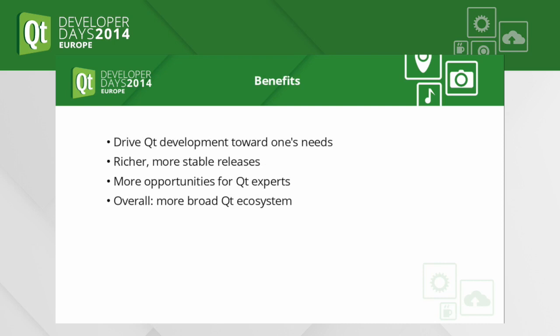The whole idea was that, of course, Digia is one of the main contributors, but there are also other key players. We wanted to add features to Qt or fix bug reports that other people were not interested in fixing. Therefore, we decided this is the right model — we can drive Qt and steer it towards our needs, make Qt an overall better product, and this gave KDAB much more opportunities.